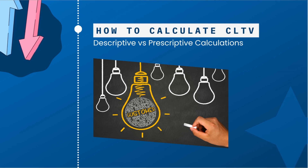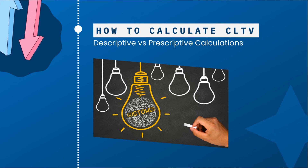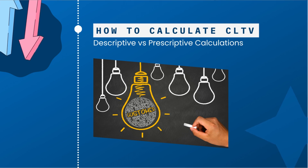Now that we've established that CLTV is important and how you can use it, the next question to answer is: what is CLTV and how do we calculate it? There are two main ways to calculate CLTV. The first is going to be a descriptive approach. The second is going to be a prescriptive approach.